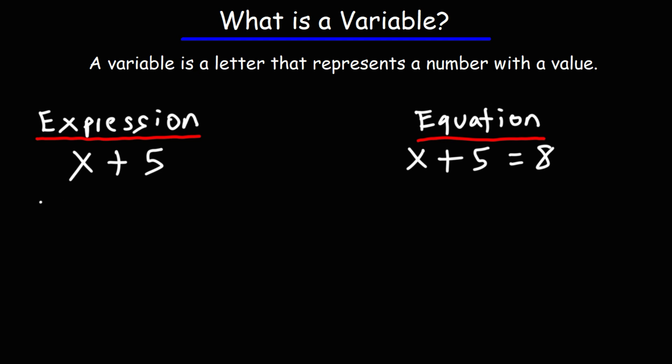On the left, we have an algebraic expression. On the right, we have an equation. Now, the difference between an equation and an expression is that with an equation, you'll see an equal sign, whereas for an expression, you will not.